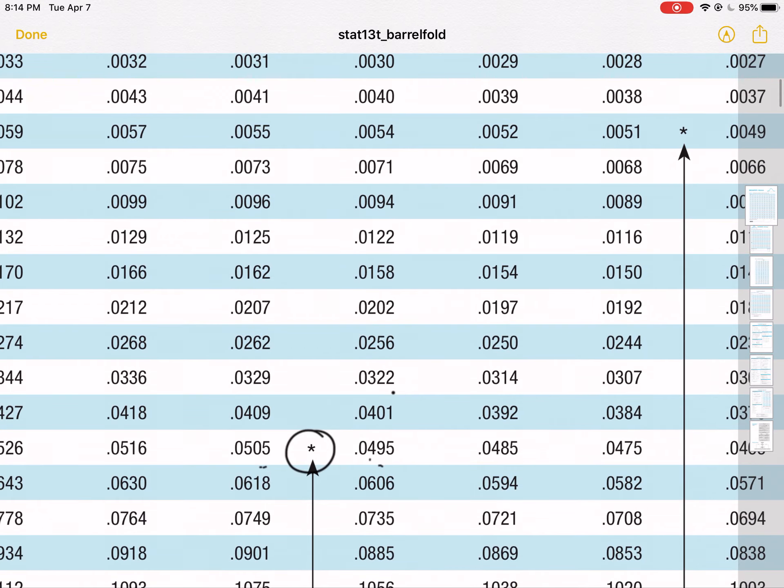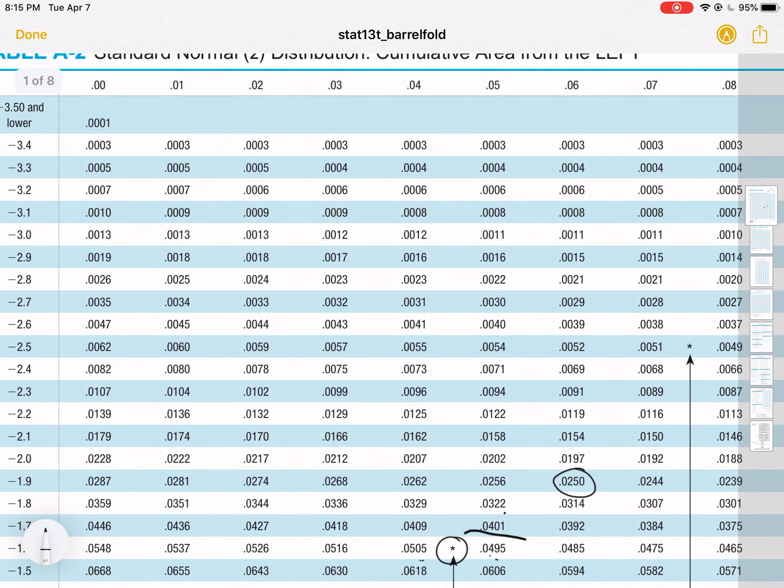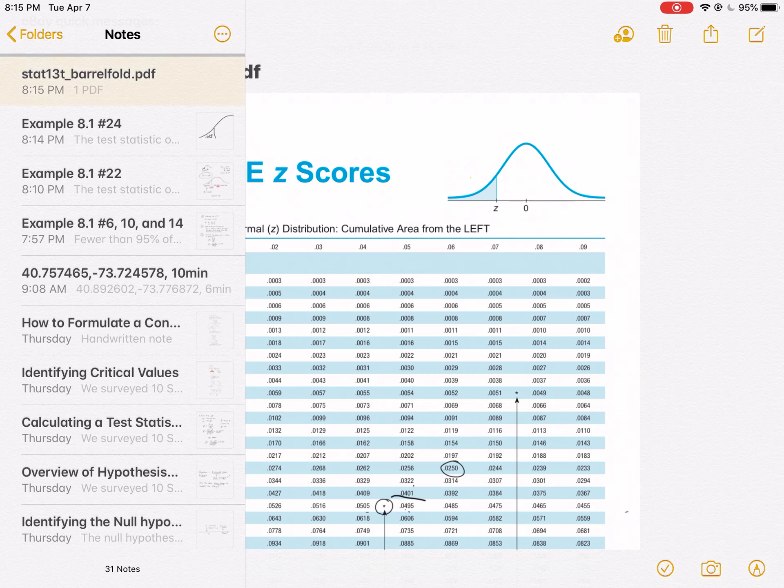0.014. There it is, 0.0250. If we extrapolate out, where is that? That's at 1.96. Now, that's negative 1.96, so we'll take advantage of that.